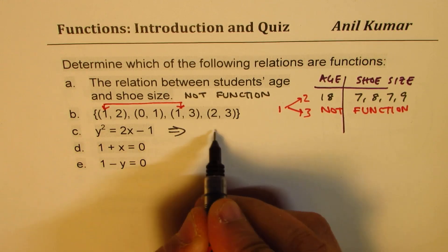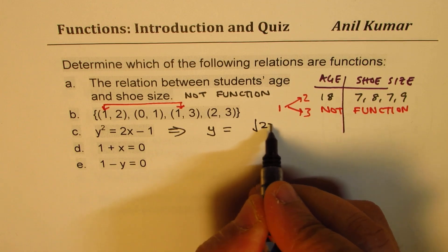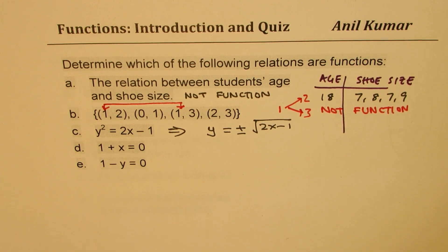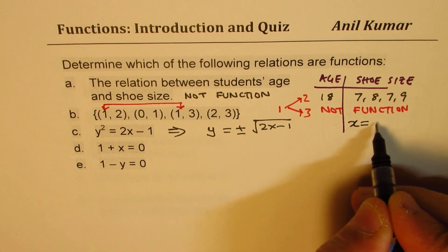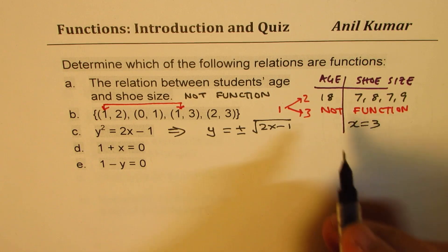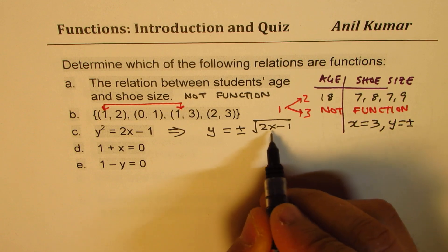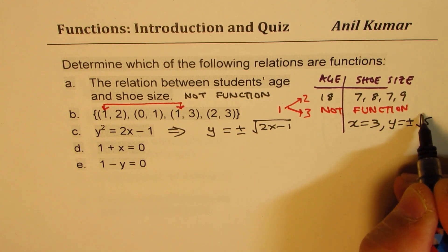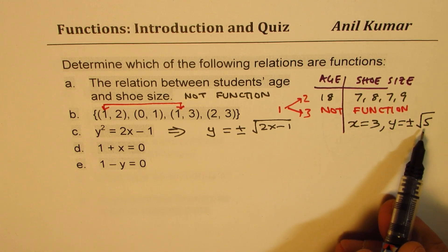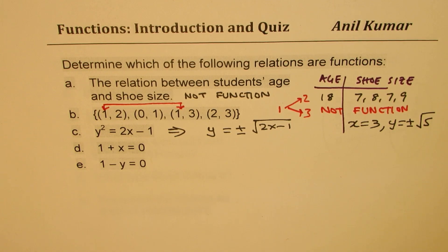For y² = 2x - 1: isolating y gives y = ±√(2x - 1). For x = 3, we get y = ±√(6 - 1) = ±√5. One input produces two outputs, so this is not a function.